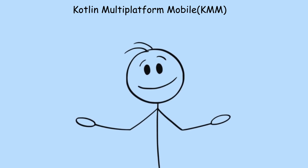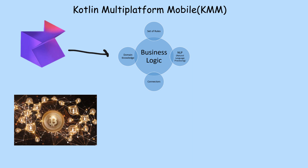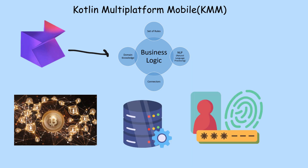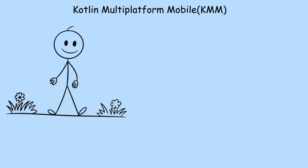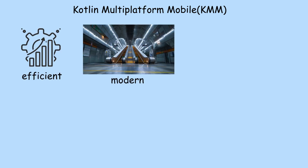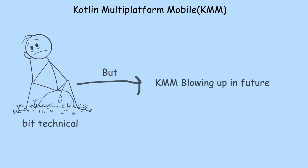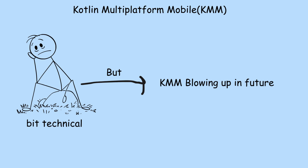Kotlin Multiplatform Mobile. This one's new but clever. KMM lets you share your business logic — things like networking, database, or authentication — between Android and iOS, but still design your UI separately on each side. That means you get the benefit of shared logic and still keep a native user experience. It's efficient, modern, and especially useful for teams already using Kotlin. The setup can be a bit technical, but it's a strong direction for future mobile development.